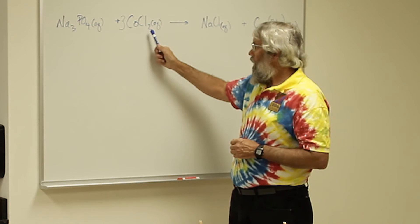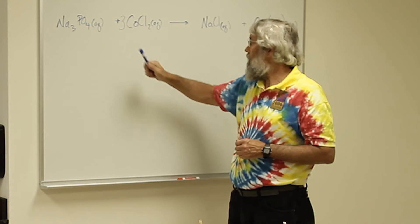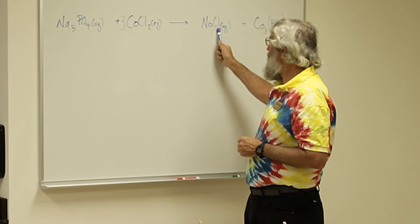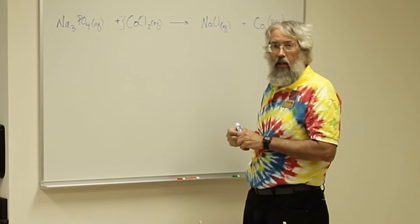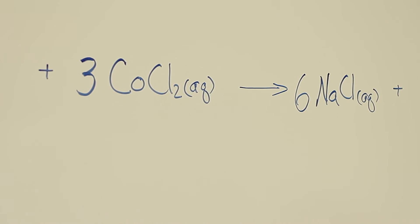But now if you look at the chlorines, there are two here times three gives us six. So in order to get six chlorines over here we need to use a six in front as a coefficient.